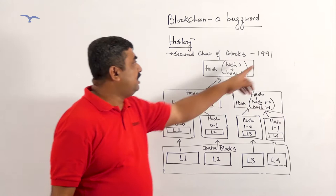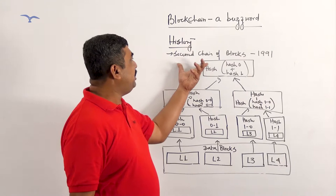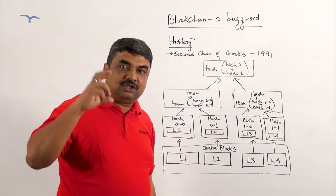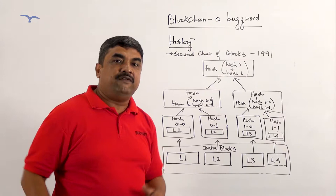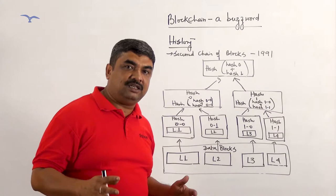Thereafter, in the year 1991, Ralph Markel came up with something known as Secure Chain of Blocks, where the data blocks are stored in a chain and the last block in the chain will contain the history of all the previous blocks inside the chain, which has been represented through a diagram.